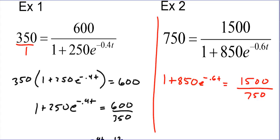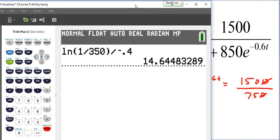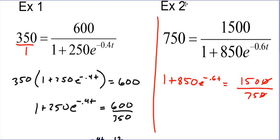From here we can probably simplify this pretty quickly. We'll go to our calculator right away. 1500 divided by 750, and we have that equals 2. So we have this equals 2. We have 1 plus 850 e to the negative 0.6t, that's a nice little answer.